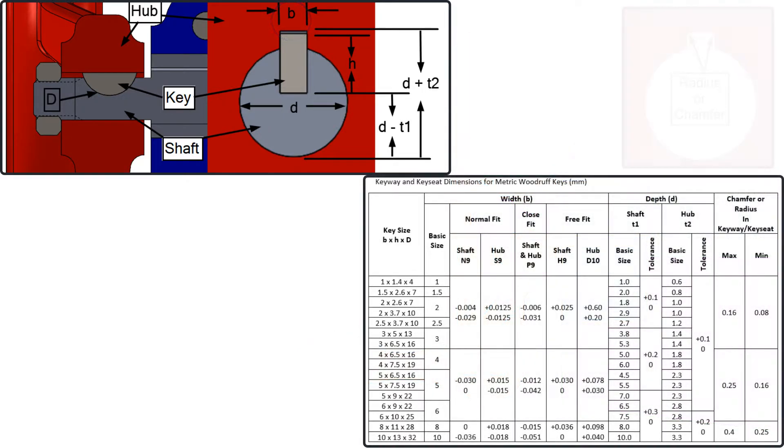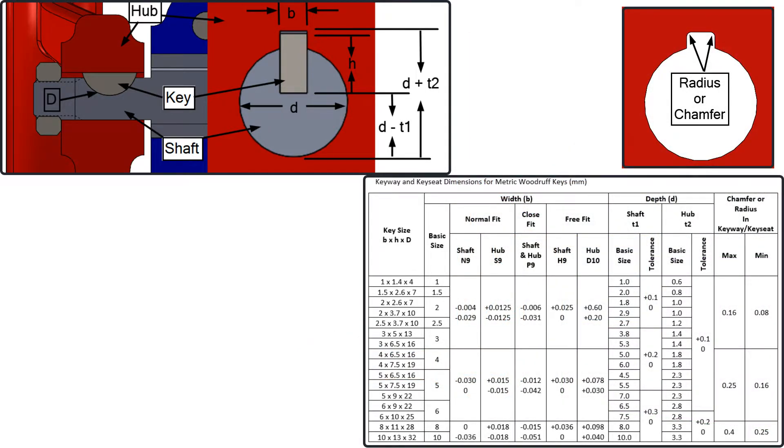This chart shows the metric Woodruff key sizes for the key, key seat, keyway, as well as the maximum and minimum radius or chamfer allowed at the corners of the key seat and keyway.